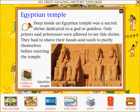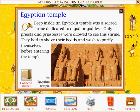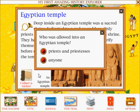Egyptian temple: Deep inside an Egyptian temple was a sacred shrine dedicated to a god or goddess. Only priests and priestesses were allowed to see this shrine. They had to shave their heads and wash to purify themselves before entering the temple. Who was allowed into an Egyptian temple? Priests and priestesses.